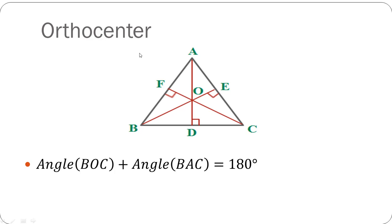Now we'll talk about the ortho center of the triangle. The ortho center is basically the meeting point of all the altitudes of the triangle. Here the altitudes are AD, CF, and BE, and their meeting point is O. The property to remember is: angle BOC plus angle BAC equals 180 degrees — they are supplementary. This comes in handy when solving sums based on altitudes of a triangle.